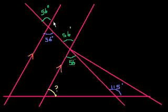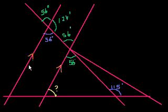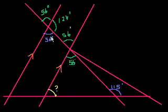We could have figured out that this is 180 minus 56, which is 124 degrees — that really wouldn't have helped us much. But these are all things you can do while playing the angle game. The first step: these are corresponding angles, so that's 56 degrees.